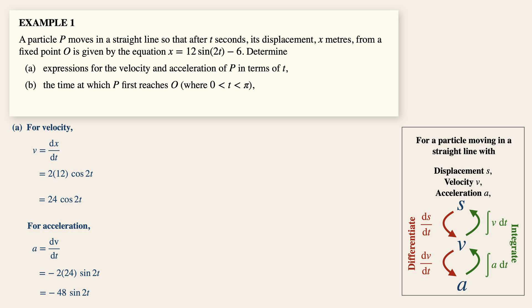Now in part b, let's find the time at which P first reaches O. We can pause a while and visualize here that at O, the displacement of the particle is simply zero. So equate this immediately to zero and solve for the value of t, which will help us answer to this question.